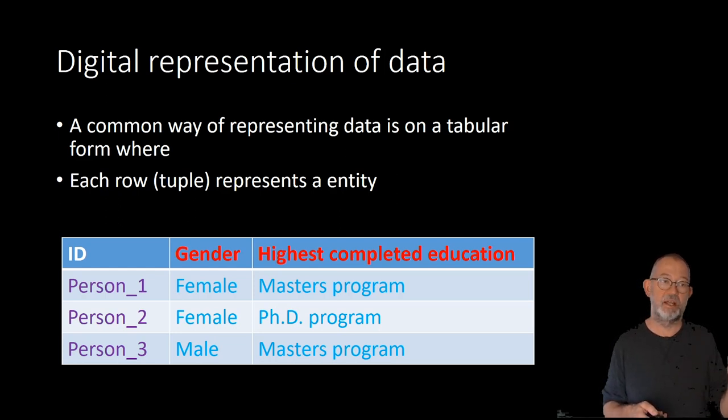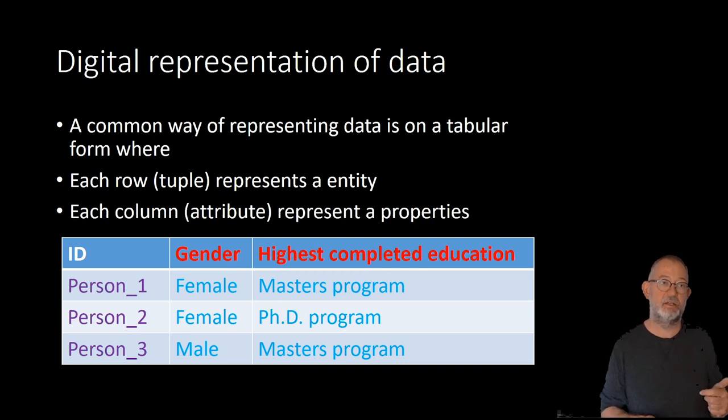So we talk about that each tuple represents an entity. And each of our columns that we, again, in computer lingo, will call attributes, they represent a property of our entity. So, again, if we look at the same data as we looked at before, we have that our person one, she is a female. And the highest completed education for person one is a master program. So this is by far the most common way of representing data when we talk about geospatial data.